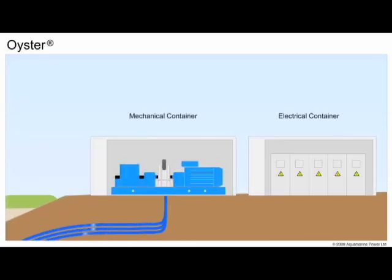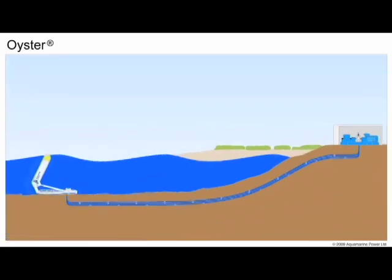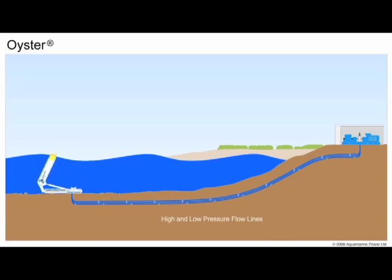In essence, the Oyster wave power device is a large pump which provides the power source for a conventional onshore hydroelectric power plant. All of the complex electronics are onshore, and there are only seven moving parts offshore.